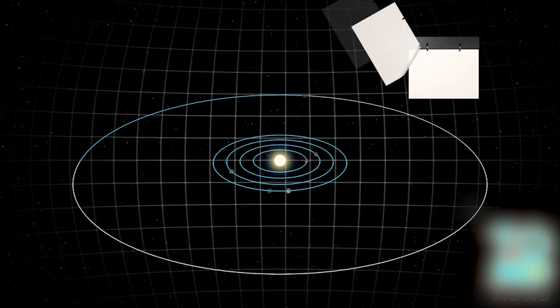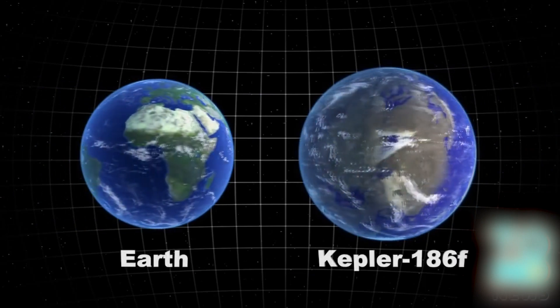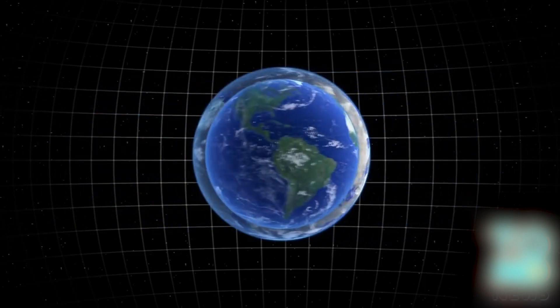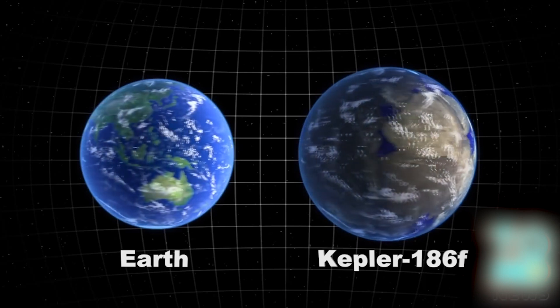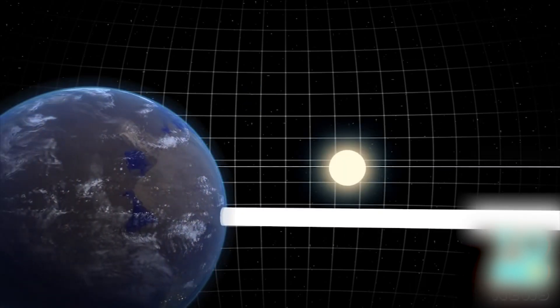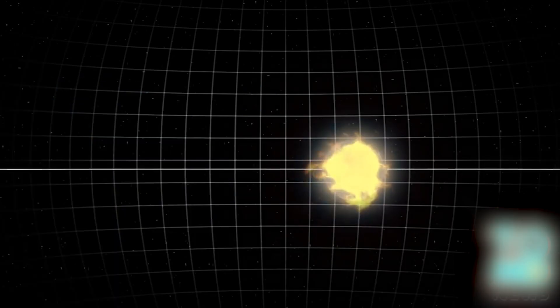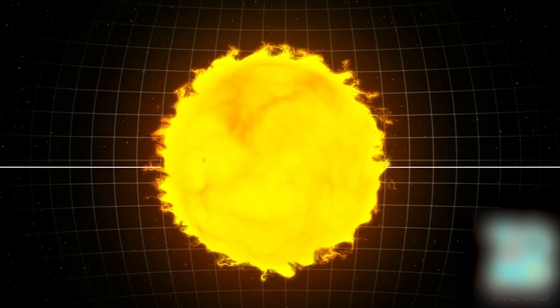Kepler-186f orbits around its M dwarf star once every 130 days. Kepler-186f receives about one-third of the heat energy that Earth gets from the Sun. The planet is about 500 light-years from Earth in the constellation Cygnus. Although its M dwarf star is cooler than the Sun, as a smaller star it is more likely to produce more solar flares and potentially harmful radiation.